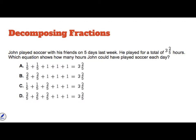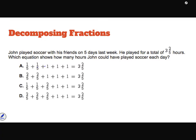Now we're moving to decomposing fractions — breaking something apart. This word problem says John played soccer with his friends on five days last week and played a total of three and two-fifths hours. Which equation shows how many hours John could have played each day? Option A has three ones plus one-fifth plus one-fifth. One-fifth plus one-fifth is two-fifths, plus three wholes gives three and two-fifths — that matches! So A is a possible answer.